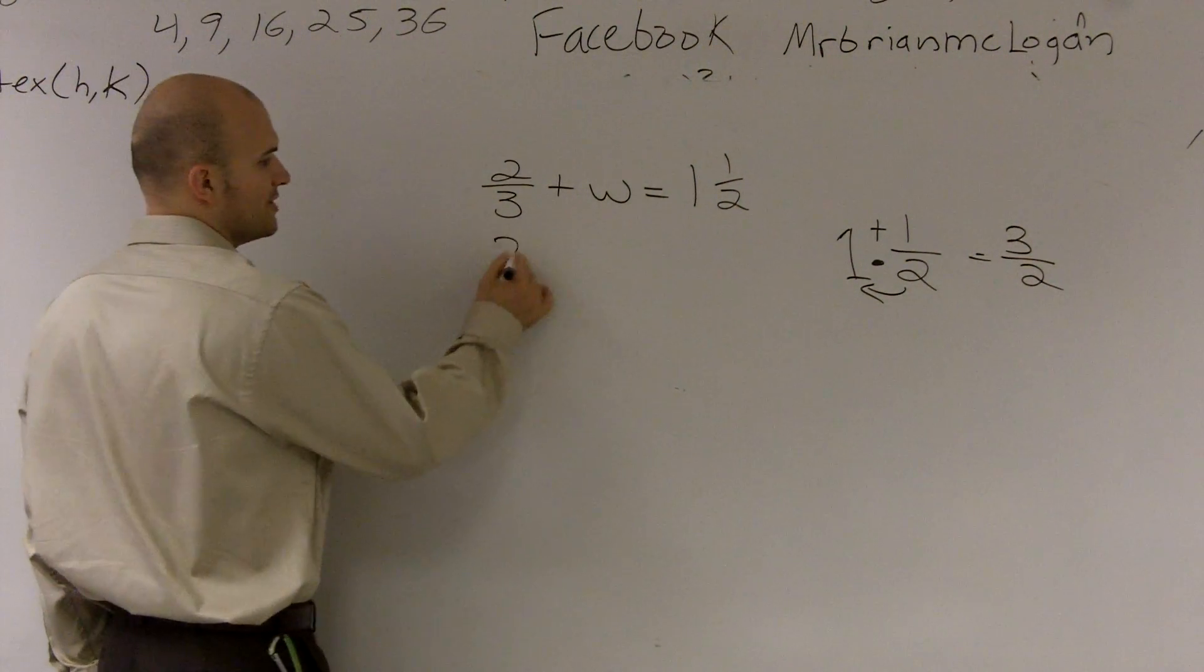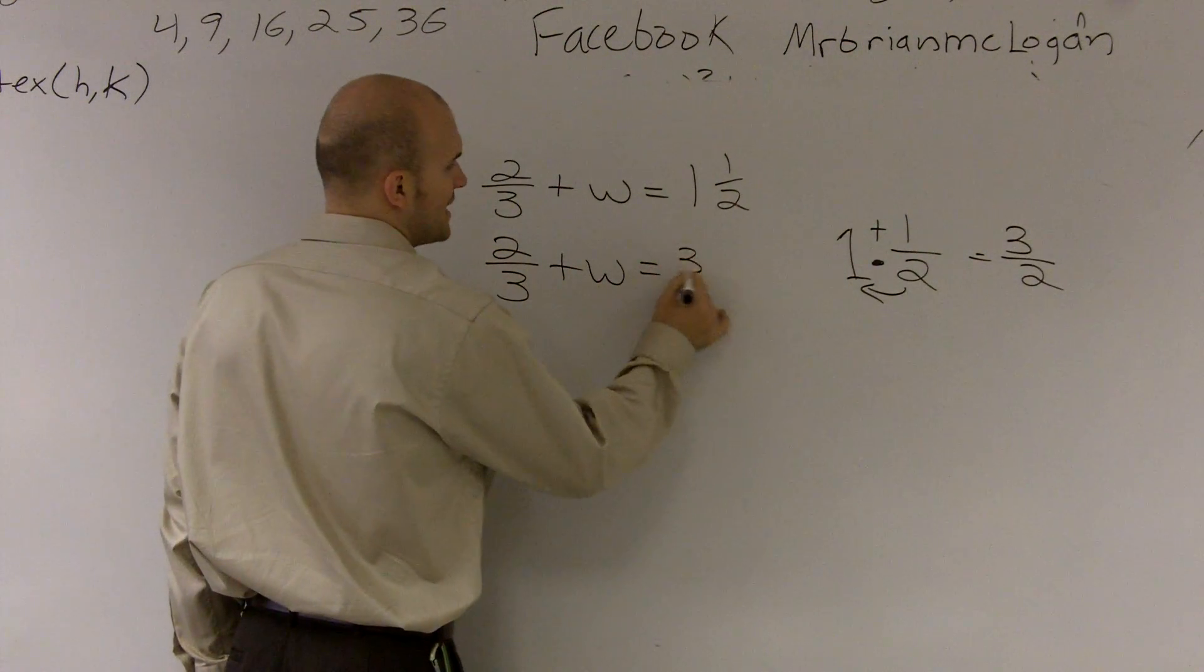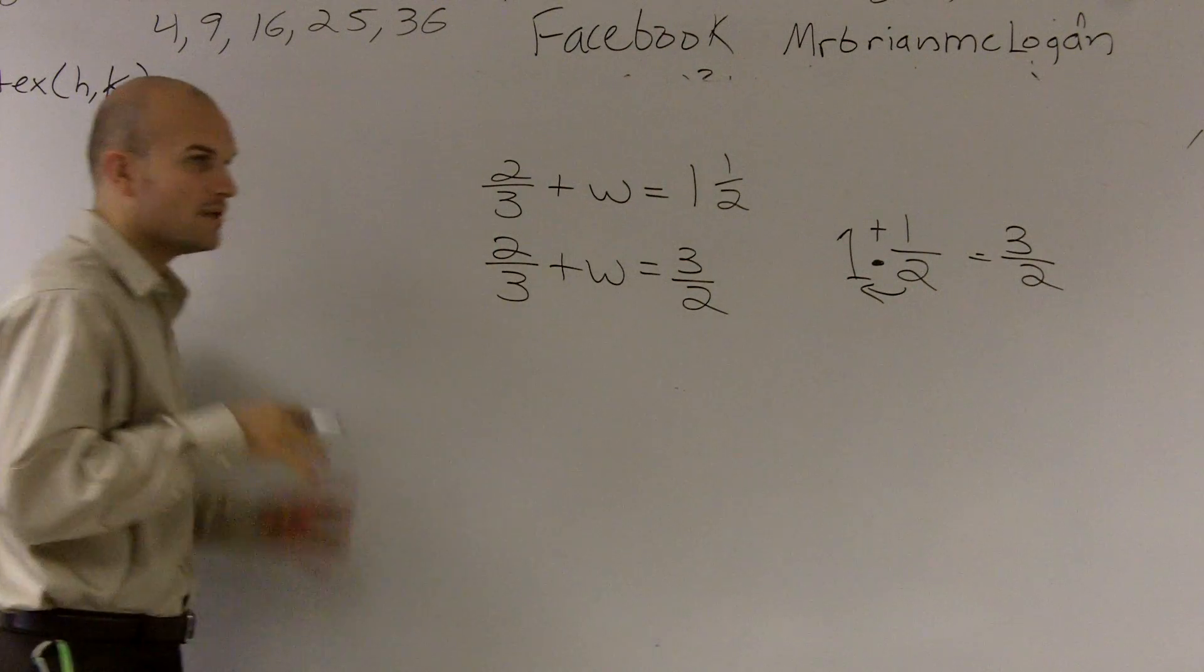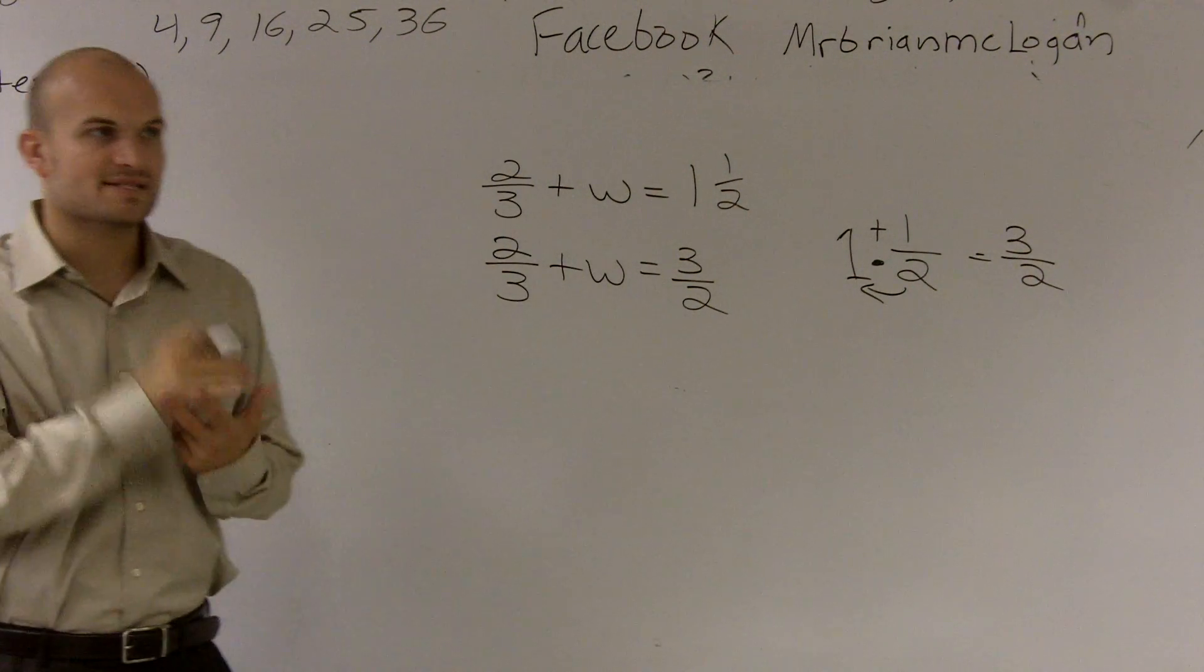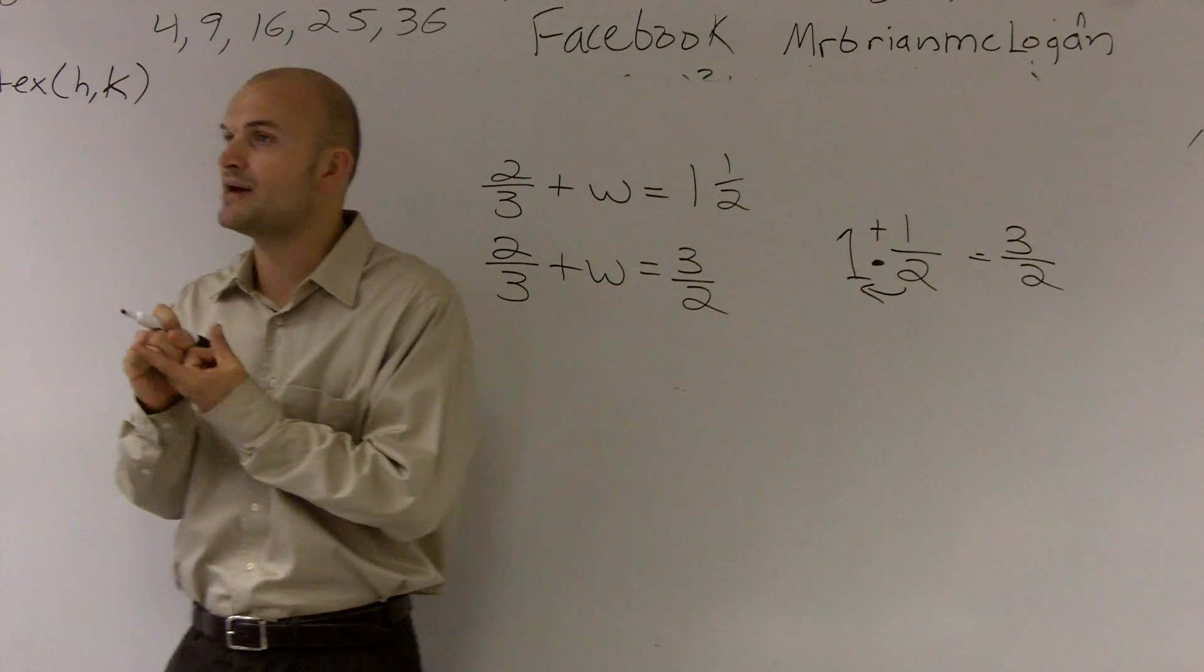So the next thing I'm going to do is I'm just going to rewrite my equation. So it's 2 thirds plus w equals 3 halves. Now I'm going to use my steps for solving a one step equation. And my steps for solving a one step equation is first I need to determine what is happening to my variable.